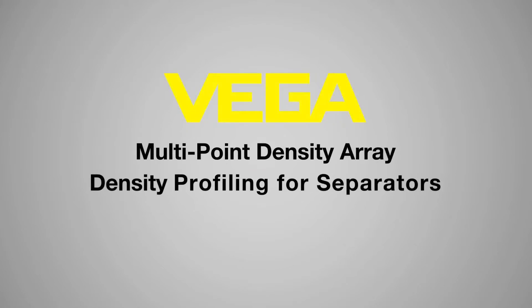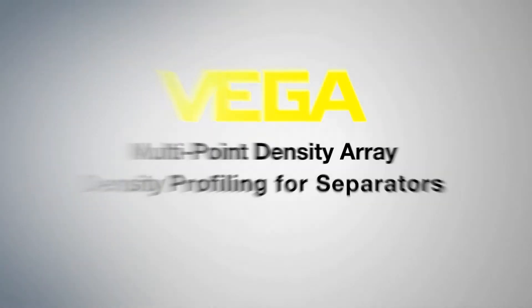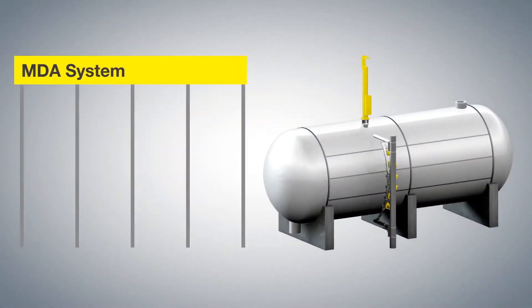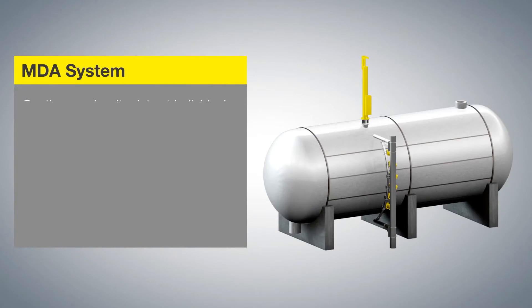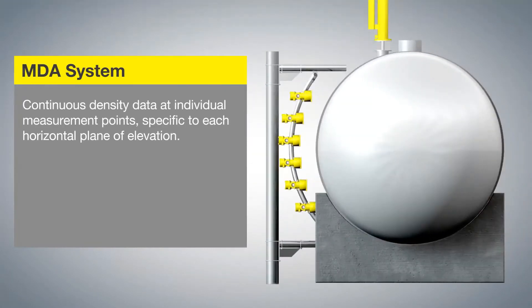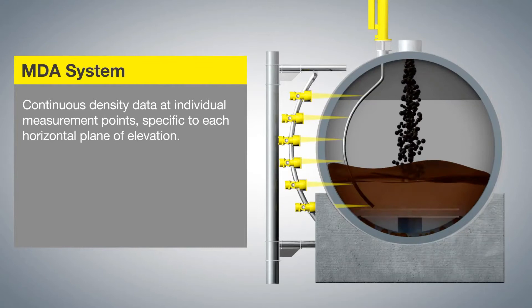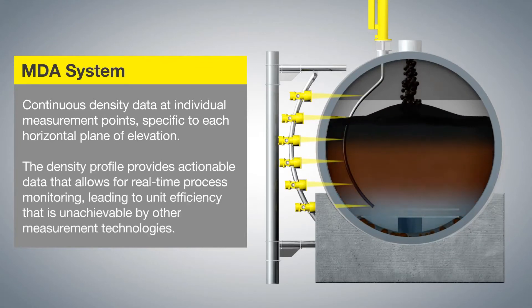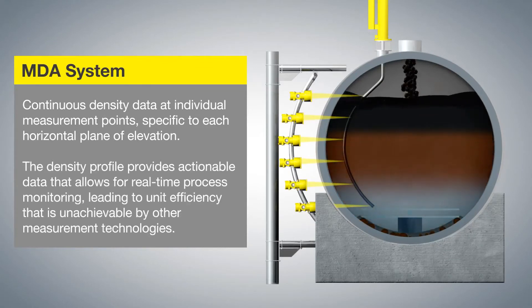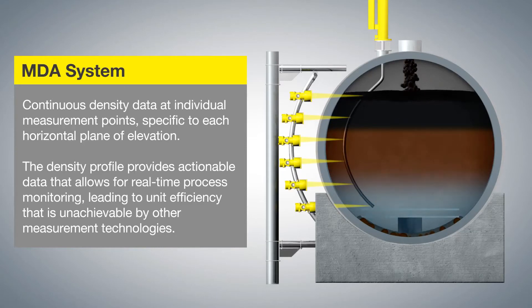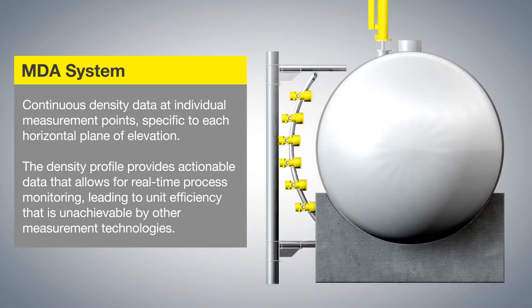Multipoint Density Array — density profiling for separators by Vega. The MDA System provides continuous density data at individual measurement points, specific to each horizontal plane of elevation. The density profile provides actionable data that allows for real-time process monitoring, leading to unit efficiency that is unachievable by other measurement technologies.